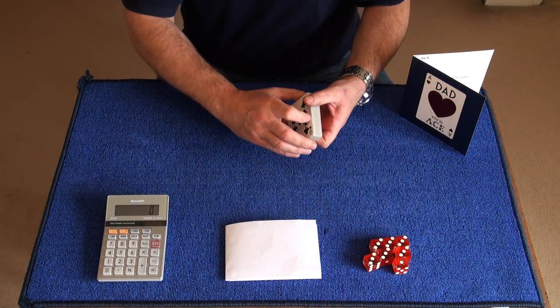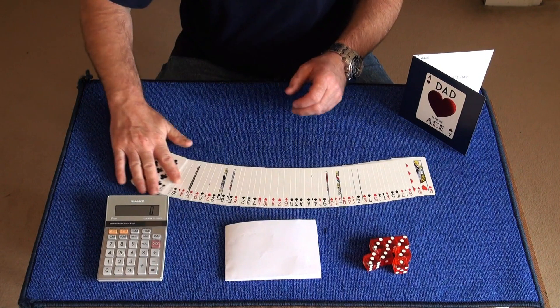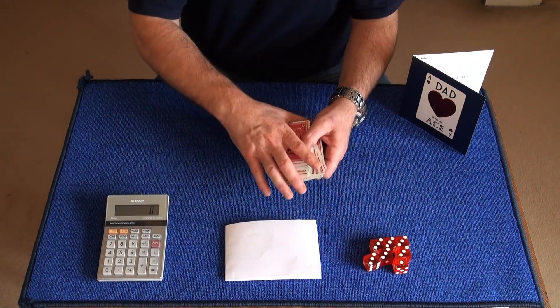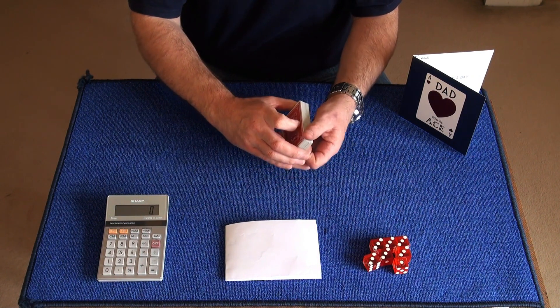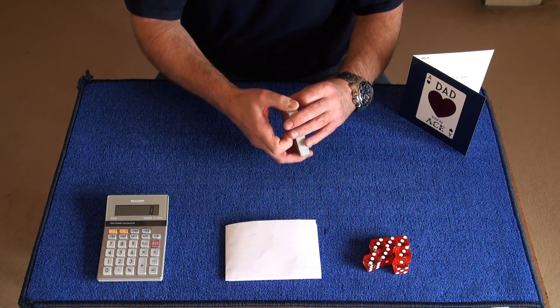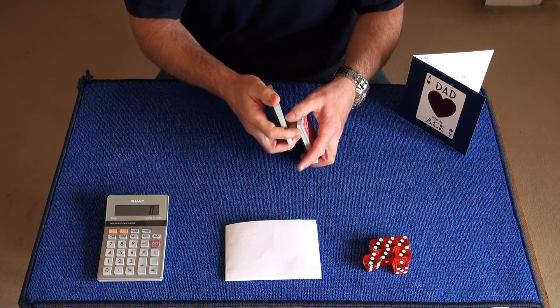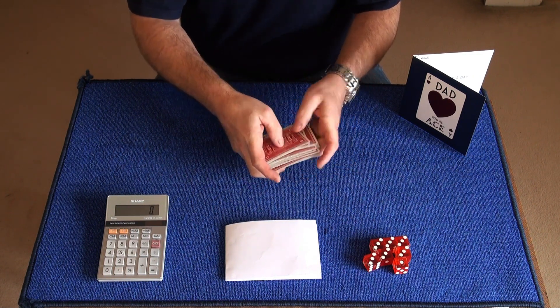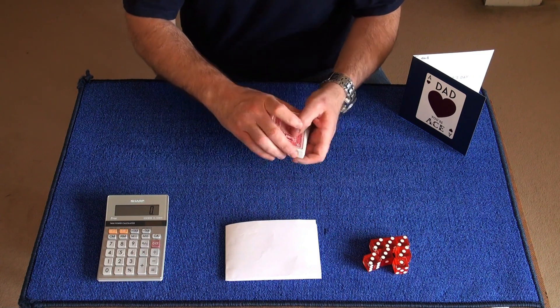I'm going to start off by showing you that the cards are nicely mixed up in no particular order. Then I'd hand the cards to the spectator to give them a shuffle. But I haven't got a spectator, so I'm going to play the part of the spectator as well. So I'll give them a shuffle like so, and perhaps an overhand shuffle as well.